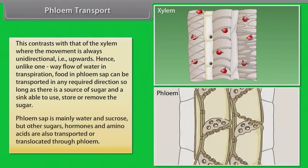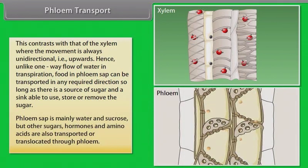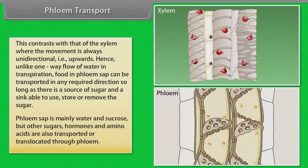Phloem sap is mainly water and sucrose, but other sugars, hormones, and amino acids are also transported or translocated through phloem.